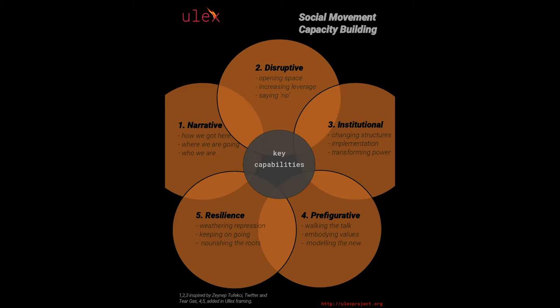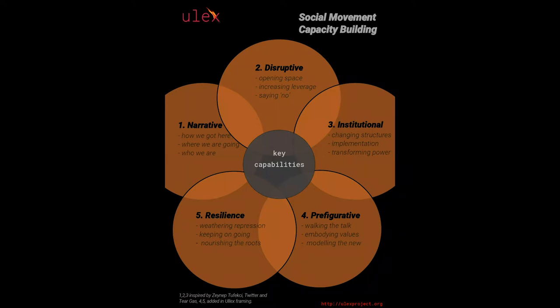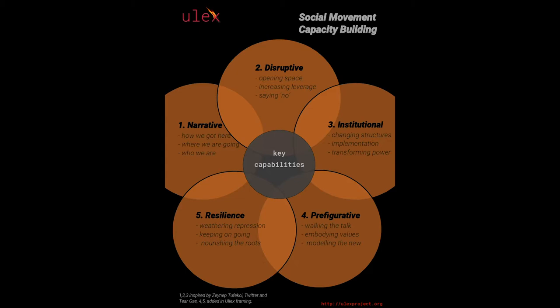The fifth capability is resilience. If we're a threat, we are going to be under attack — by the state, by non-state actors. The system is structured in ways that suppress and repress our capacity to change things. Resilience is key in weathering repression and suppression, avoiding burnout and disillusionment and cynicism that arise in long-term struggles where we hemorrhage talent.